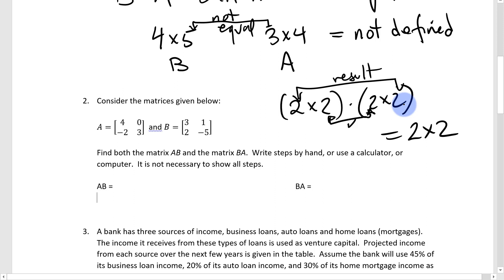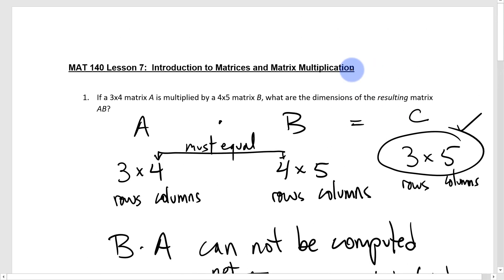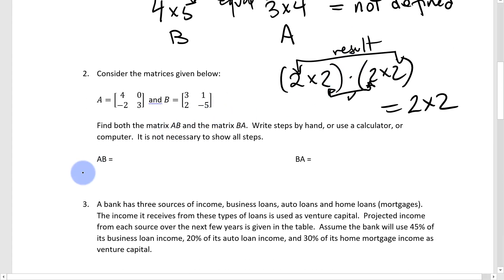We can do A times B and we can also do B times A. This is a significant case where we don't have commutativity that you're accustomed to with normal multiplication. You've always thought 5 times 2 is the same as 2 times 5, but with matrices, A times B isn't the same as B times A. Sometimes it can't even be done, and if it can be done both ways, the results aren't necessarily equal. Multiplication of matrices is not commutative.